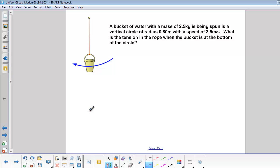First, let's draw a free body diagram of the bucket. Mg is down, force of tension is up, and it is bigger than Mg because the acceleration is also up, since centripetal acceleration is towards the center of the circle.